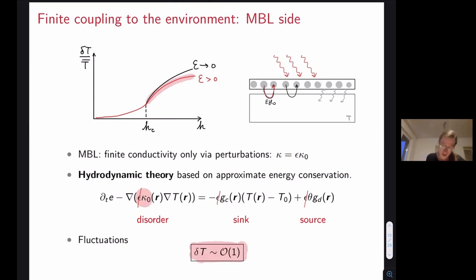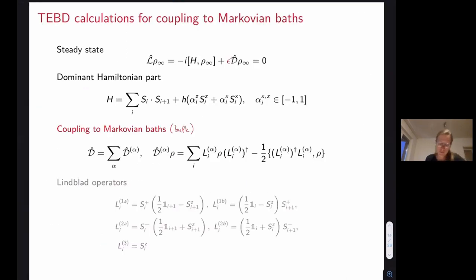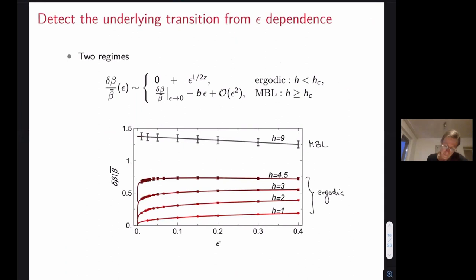So now that we have some sort of theoretical predictions for what should be happening, we actually do a concrete numerical calculation. We look at, by doing the TEBD time propagation, we calculate the steady states of disordered system with Hamiltonian with disordered fields that is weakly coupled to bulk Markovian baths, which are importantly not Hermitian so that they don't lead to an infinite temperature steady state. Then we look at this quantity, we look at the variation of these local temperatures as a function of coupling strengths to the Markovian baths.